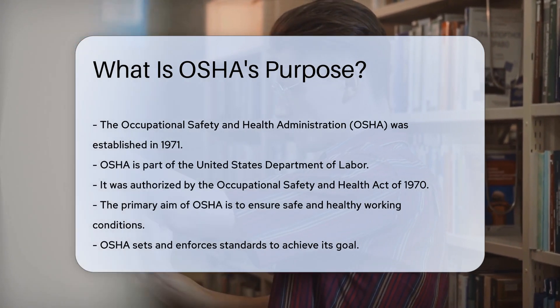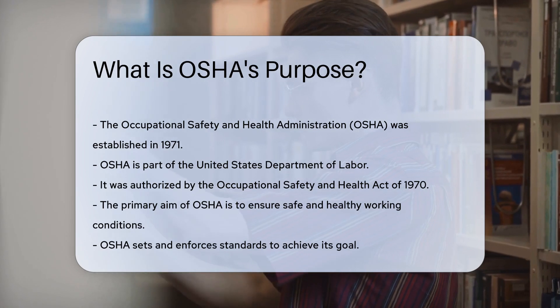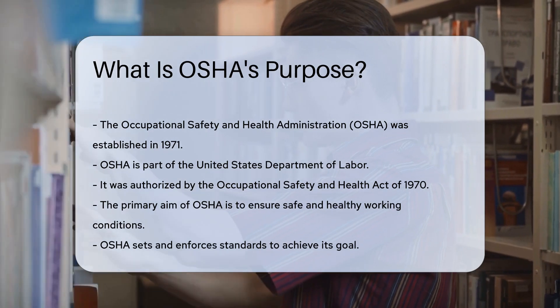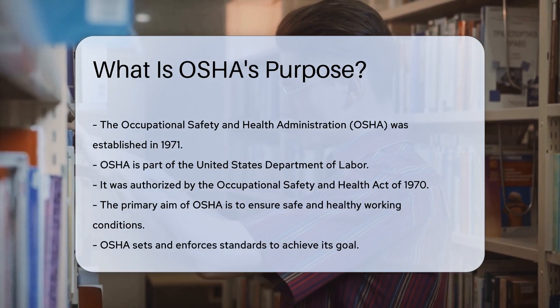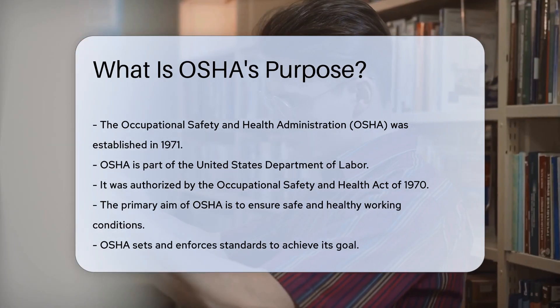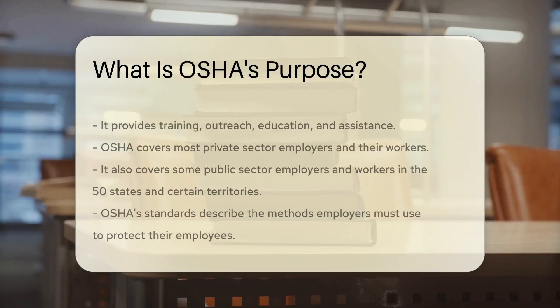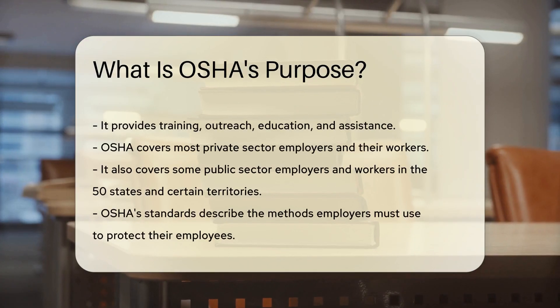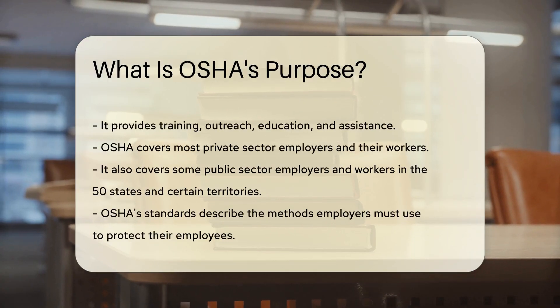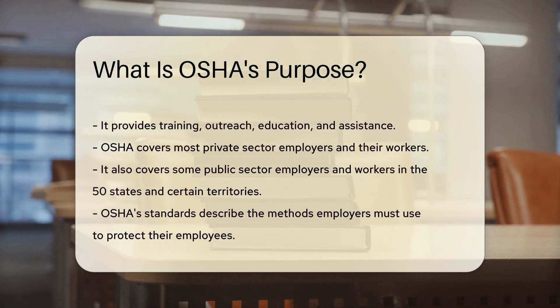The primary aim of OSHA is to ensure safe and healthy working conditions. OSHA achieves this by setting and enforcing standards. It also provides training, outreach, education, and assistance.